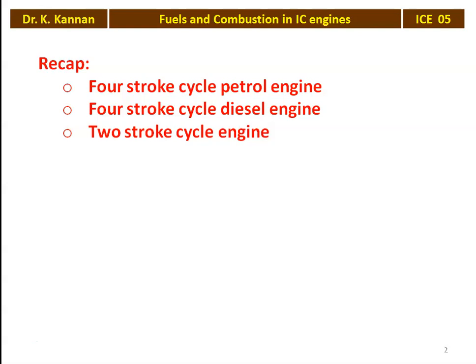We recap from the previous lecture. In the previous four lectures, we studied about the 4-stroke cycle petrol engine, 4-stroke cycle diesel engine, 2-stroke cycle petrol and diesel engine, and we compared the petrol and diesel engine, and also compared the 4-stroke cycle engine and 2-stroke cycle engine. The basic kinematics and working principle of IC engine is now complete.